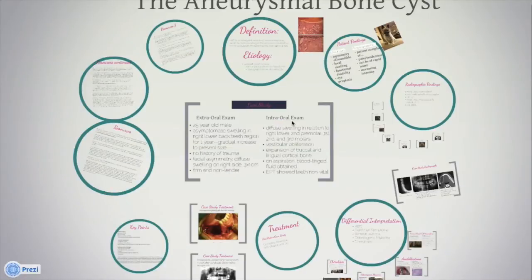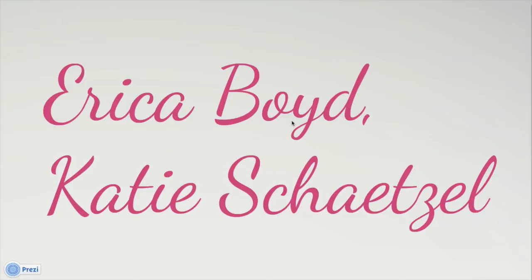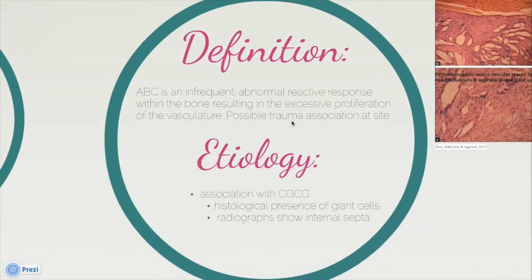The Aneurysmal Bone Cyst, presented by Erica Boyd and Katie Schetzel. The Aneurysmal Bone Cyst is a tumor of unknown cause, and therefore its categorization and description varies slightly with each source referenced. ABC is best understood as an abnormal reactive response within the bone giving rise to excessive proliferation of the vasculature. Some believe this reactive lesion is a delirious response to trauma due to the radiographic and histological qualities of ABC; the terms cyst and neoplasm appear in the literature.